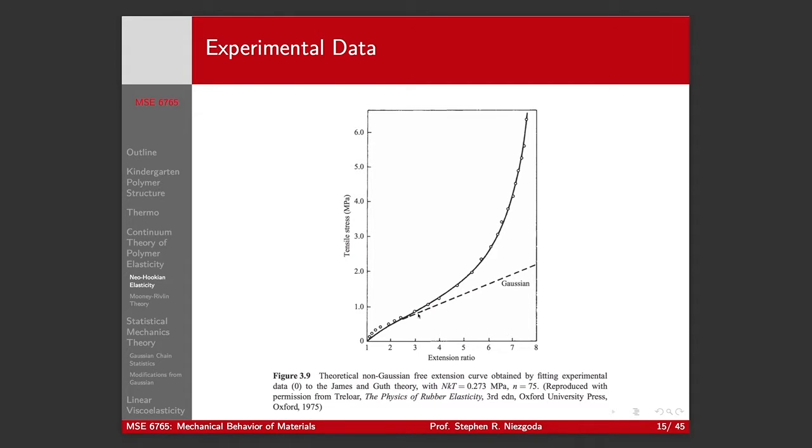And if we look at some experimental data, what this curve labeled Gaussian, this is basically our Neo-Hookian model, and that works out to a stretch ratio of about two. So, as long as we're in the regime where we're approximately doubling the original length, most elastomers behave pretty closely to this Gaussian behavior. But once you get beyond that, they deviate pretty strongly, and we'll look at some nonlinear statistical mechanics theories that capture this behavior coming up.